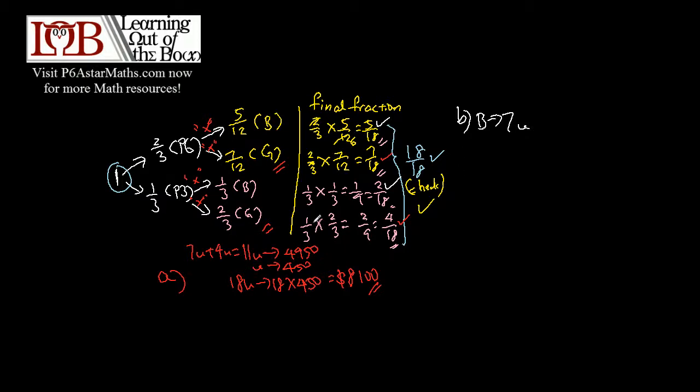And then 7 units is 7 times 450, which is 3,150. And the difference is...